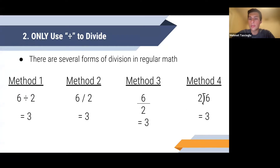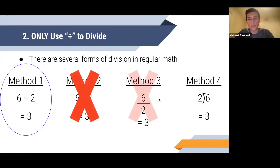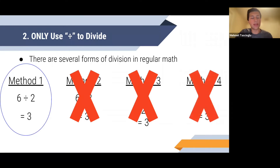We can also write six slash two in a horizontal fraction form, which also equals three. Finally, another teaching method uses a long-division bracket symbol — it's not a square root — where six is the dividend and two is the divisor, giving six divided by two equals three. In equations, you're only allowed to use the ÷ symbol when writing solutions. None of the other symbols will even appear on the cubes, so you shouldn't be using them. Some people think they can interchange these symbols in solutions — you can't. Only use the division symbol.